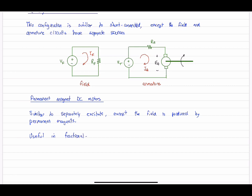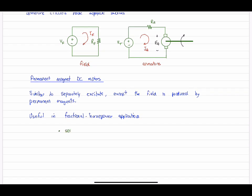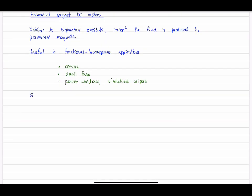The magnetic field from permanent magnets is generally quite a bit less than an electromagnet. And so we would expect these to be useful in a number of fractional horsepower applications. So including little servo motors, small fans, cooling fans, for example, and automotive applications like power windows, windshield wipers, and so on.